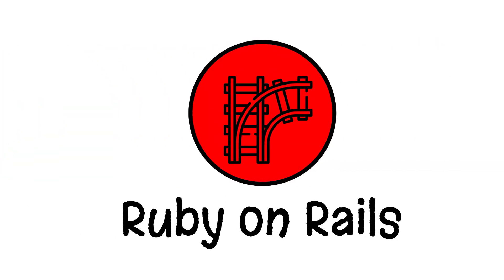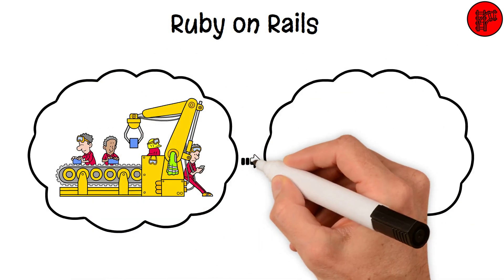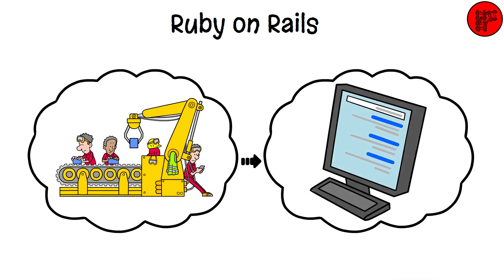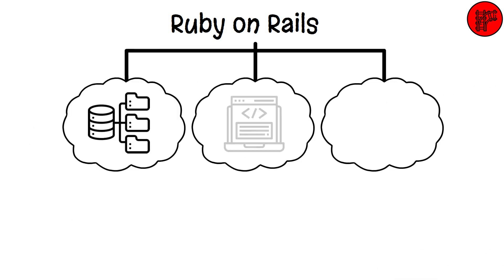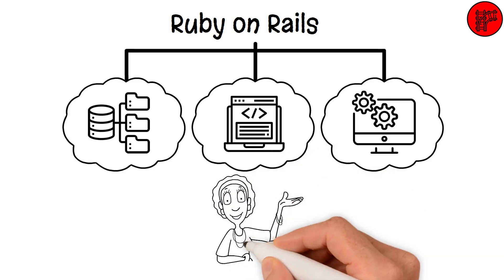Ruby on Rails. Imagine Ruby on Rails as a conveyor belt in a factory. It streamlines the production of websites with its built-in structures for databases, web pages, and web services, making web development faster and easier.